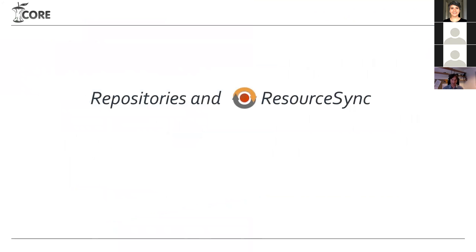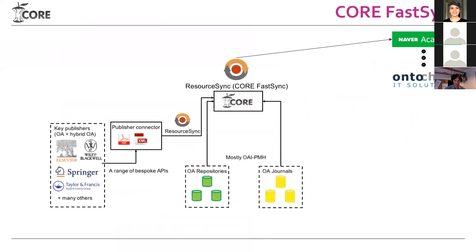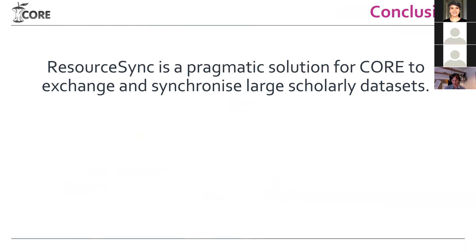You might ask: CORE can already ingest using ResourceSync from publishers, and CORE can expose ResourceSync to anyone else — so why do we keep harvesting from repositories using OAI-PMH when ResourceSync is better? I would like to make the case for why ResourceSync is better in the second presentation. In the end, we want repositories to adopt and migrate to more recent solutions. Overall, ResourceSync is a pragmatic solution to exchange and synchronize scholarly datasets.